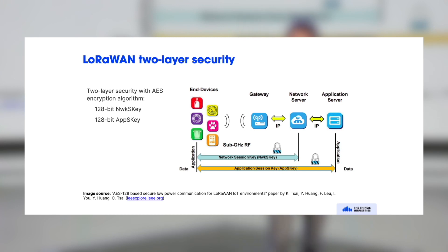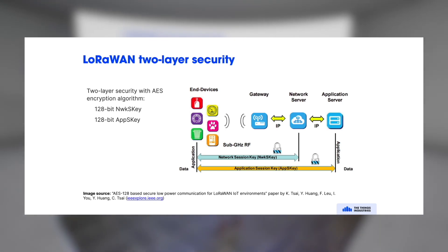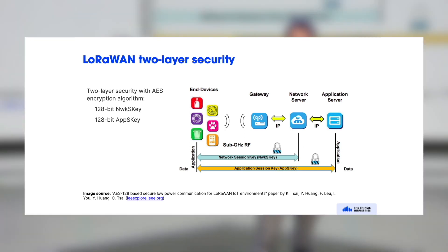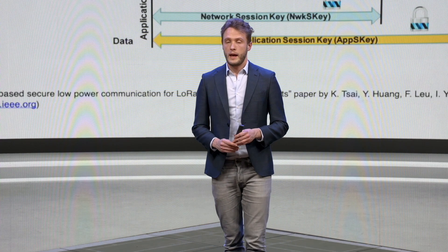LoRaWAN provides security on two different layers. First, the network layer — security is provided by the network session key. Second, the application layer — security is provided by the application session key. The network session key is used for integrity and authenticity, whereas the application session key is used for confidentiality. These are AES 128-bit keys, which are the industrial standard for securing communications and are still relatively cheap for end devices to implement.